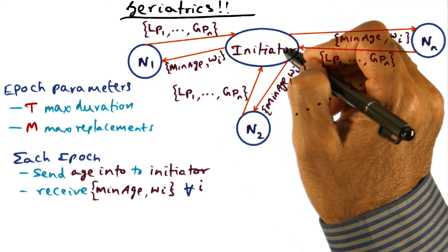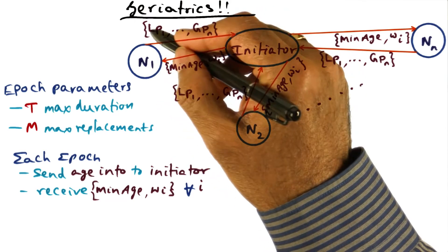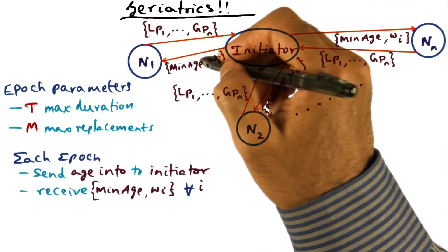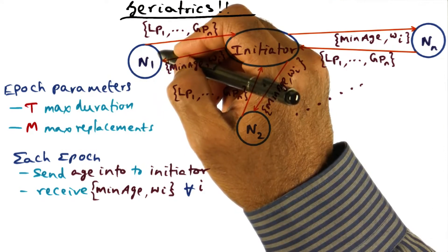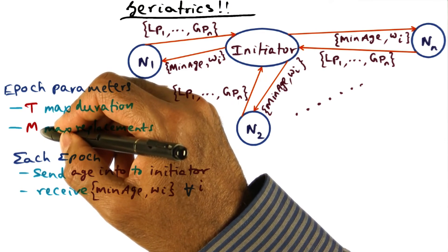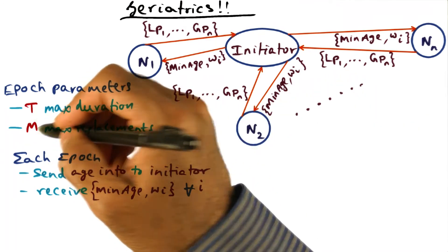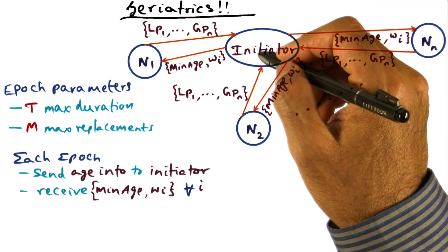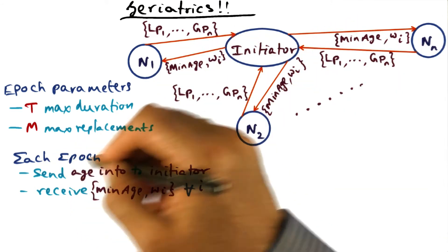So it computes that minimum age, and it also computes, given the minimum age and given the distribution of the age demographics coming from N1, what fraction of the pages that belong to N1 are going to be replaced in the upcoming epoch. And that is the weight parameter for this particular node. For instance, if it turns out that N1 has 10% of the candidate pages that are going to be replaced in the next epoch, then its weight is 0.1. So what this initiator does is it computes this min age, and it also computes the weight for each one of the nodes, and that's what is sent back to each node.